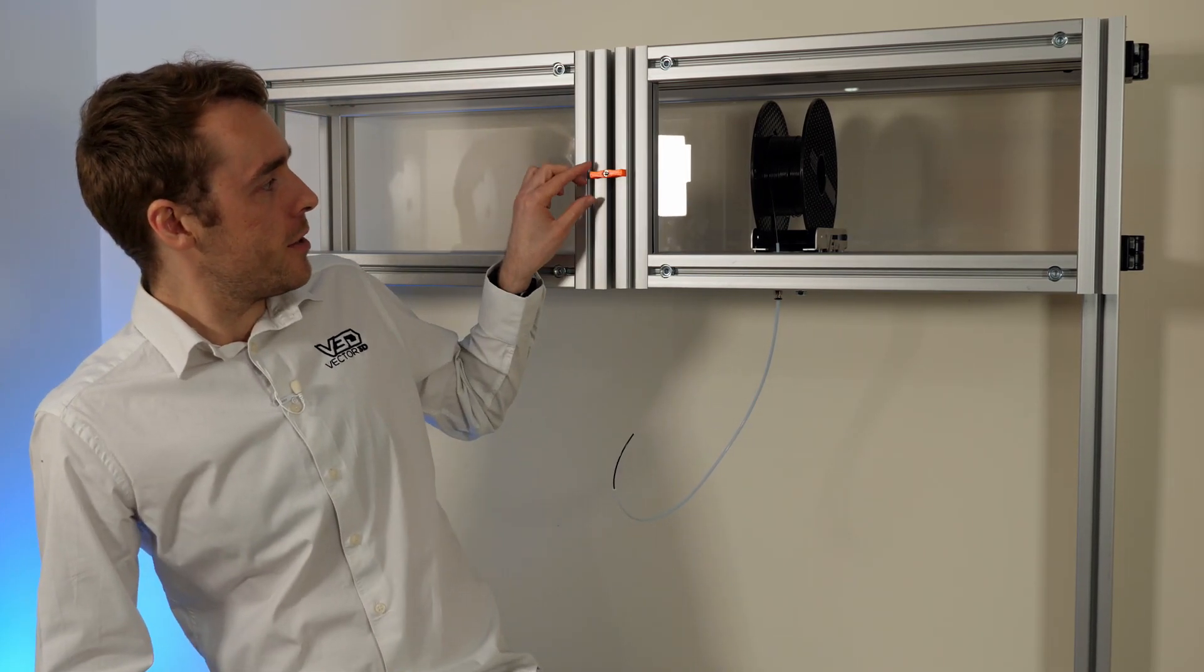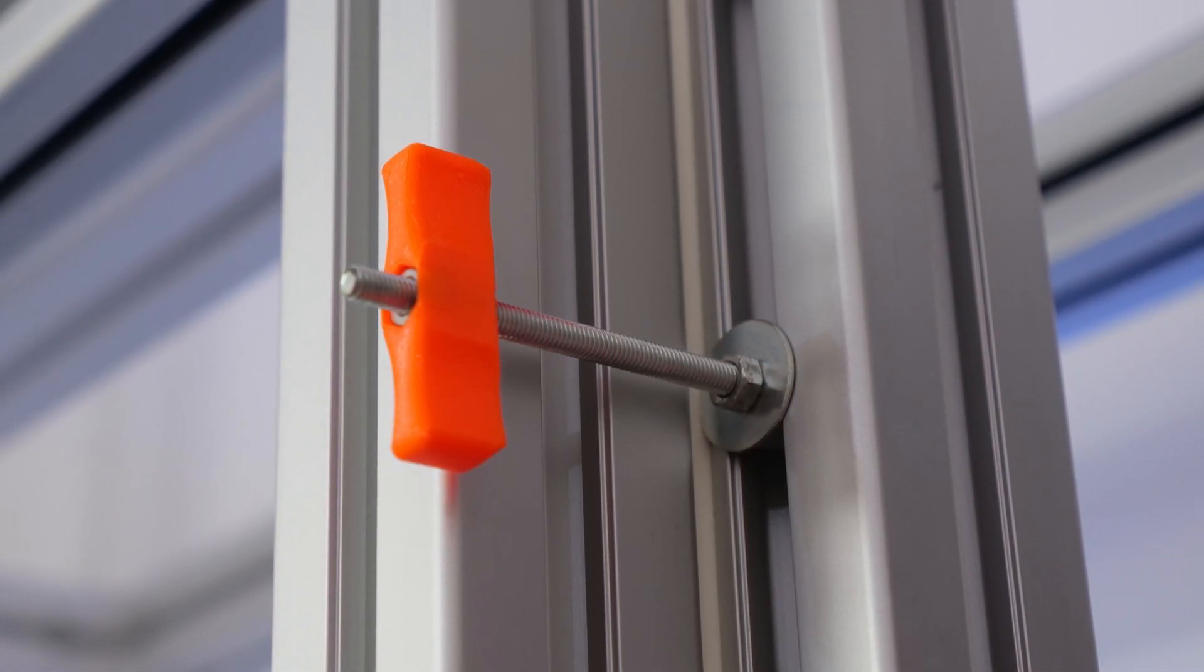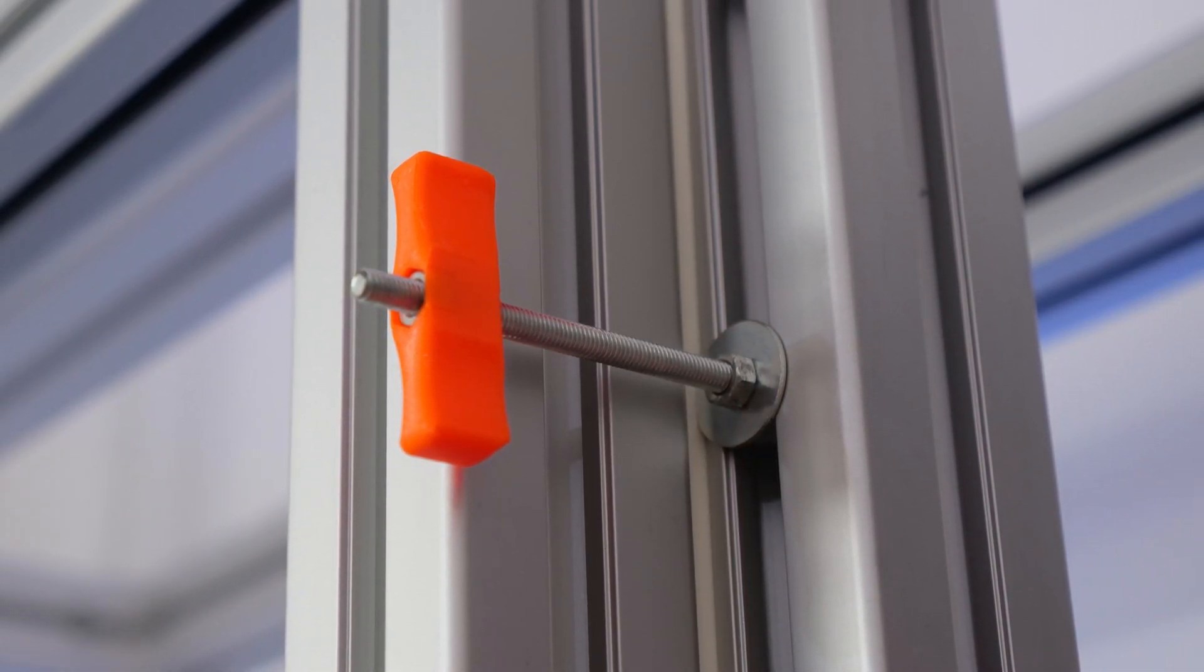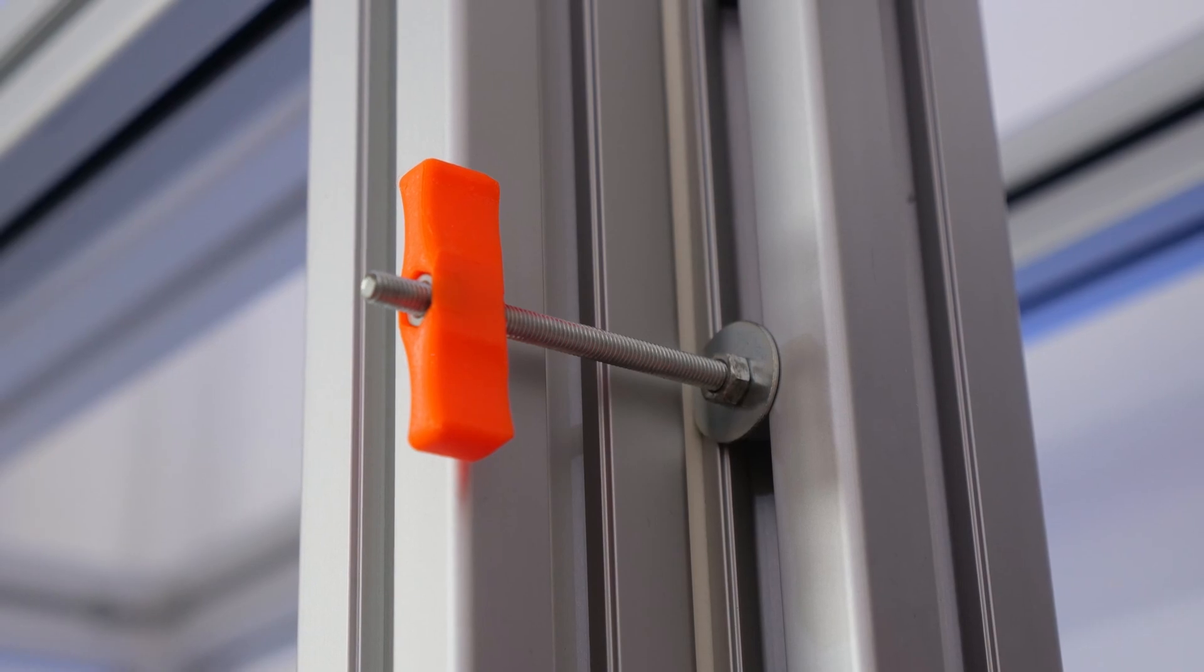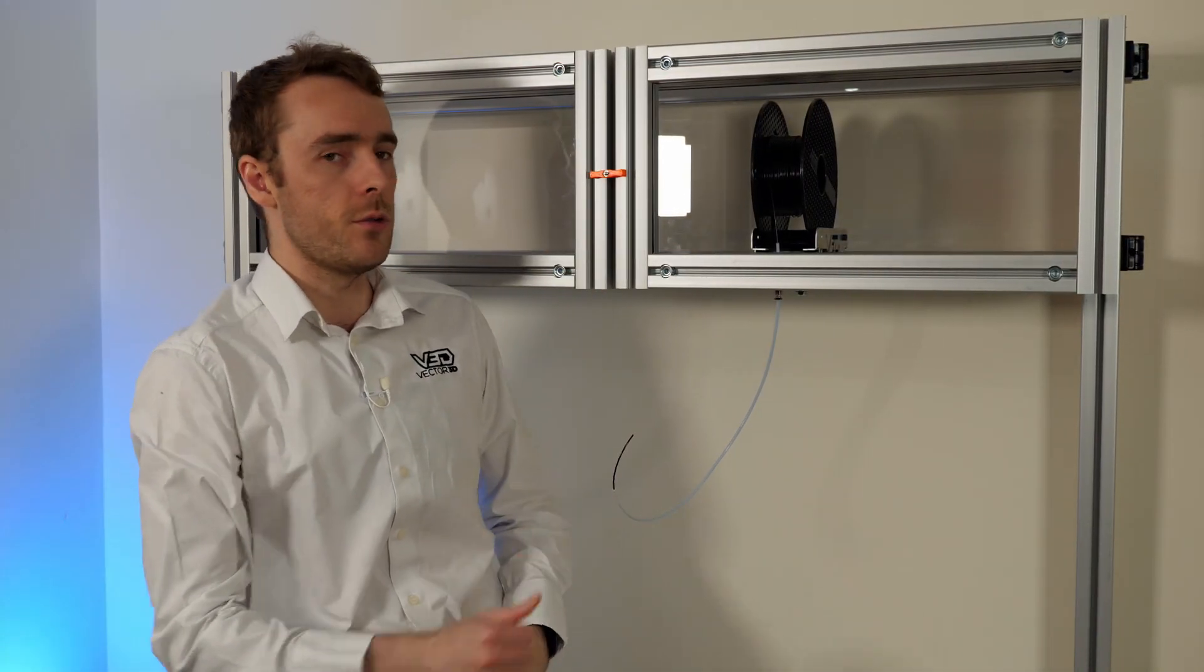What we've got here is basically a bit of threaded rod that's held into the extrusion with a hammer nut and a washer and then a little 3D printed kind of latch on the top and you simply turn it and it forces them closed.